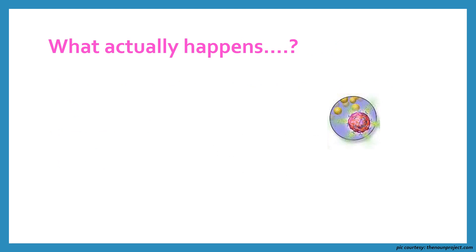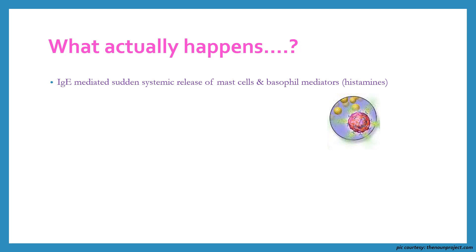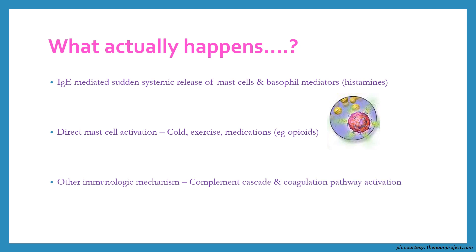What actually happens is that there is IgE-mediated sudden systemic release of mast cell and basophil mediators, primarily histamines. This leads to edema of tissue causing laryngeal and bronchial constriction and dilatation of blood vessels. Sometimes there is direct mast cell activation, for example in cold, exercise, and with certain medications like opioids. Other immunological mechanisms include the complement cascade and the coagulation pathway activation.